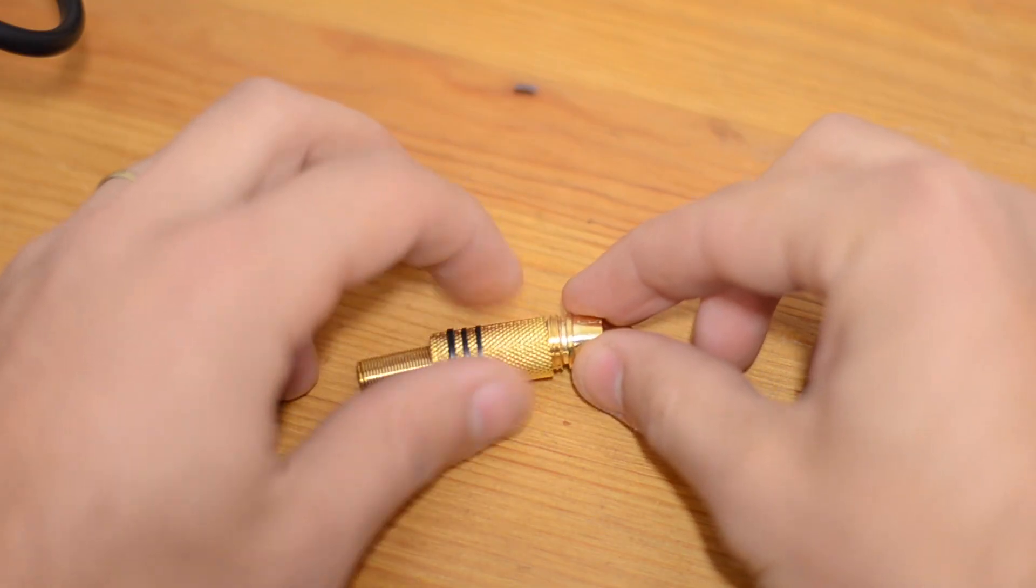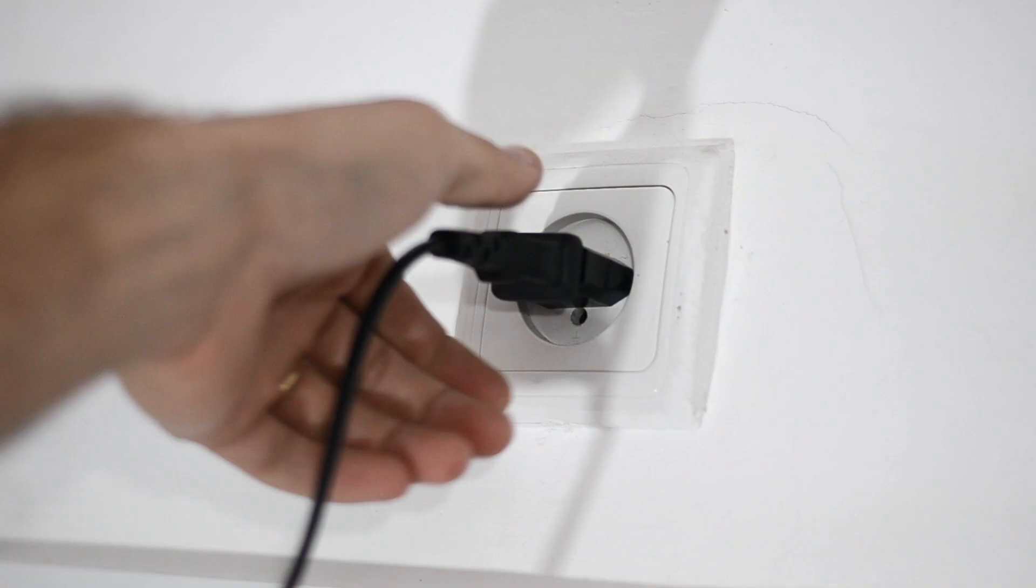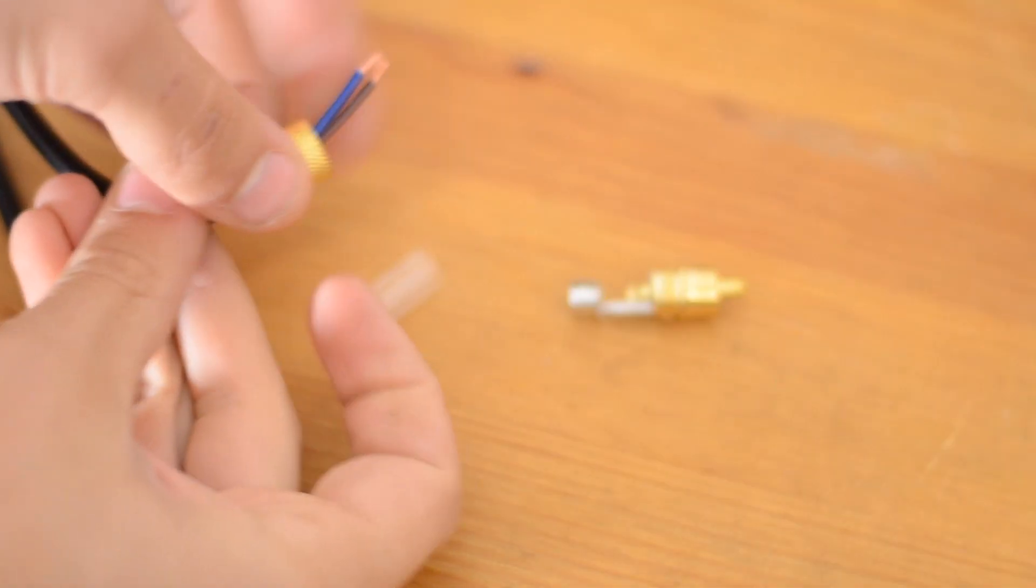Next I'll disassemble my connector, and then making sure that my charger is already unplugged, I'll slide those pieces over the wire.